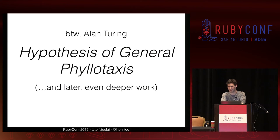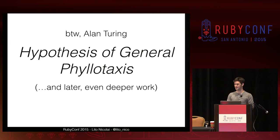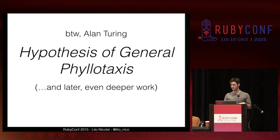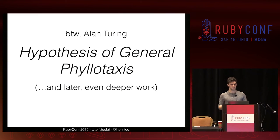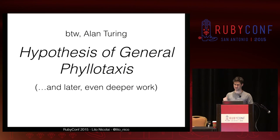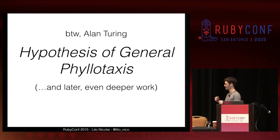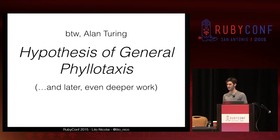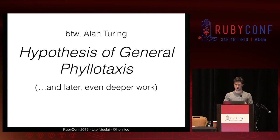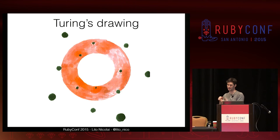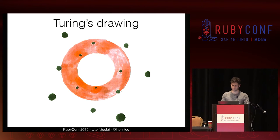By the way, that was Alan Turing's model — he was the first person to describe this in the general case. He called this the hypothesis of general phyllotaxis, which means his idea of how leaves grow. He later refined that to be an even more accurate model. It's interesting that it's Turing that made this first model because the mathematics is very similar to the mathematics of actually parsing computer languages. Turing devised a closed-form solution — he didn't run the simulation like I just did. He figured it out drawing in his notebook.